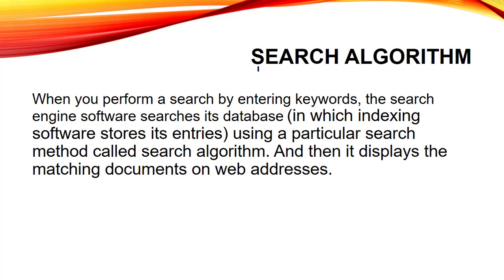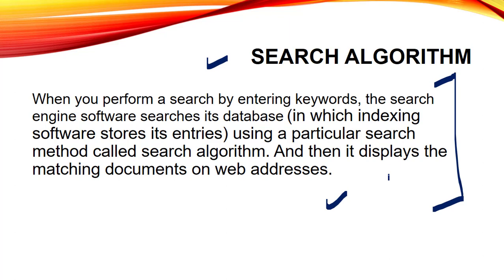Next we have the search algorithm. For performing all these tasks — fetching keywords, giving data to the user, and searching things on the database and web — there is a particular structure or program being followed, and that is termed as the search algorithm. In this search algorithm, every web browser, every search engine, and every website has a different set of rules. These rules provide a proper method for searching or identifying data. So when you perform a search by entering keywords, the search engine software searches its database using this particular search method — the search algorithm — and then displays the matching documents or web addresses. It looks simple but it is a very time-consuming and lengthy process.